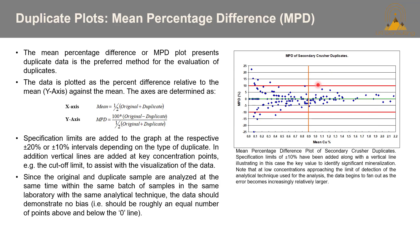Since the original and duplicate samples are analyzed at the same time, within the same batch, in the same laboratory with the same analytical technique, the data should demonstrate no bias — meaning a roughly equal number of points above and below the zero line, shown here in green. Should any bias be evident, it's a cause for concern and requires follow-up. You can see here there is a lot of movement from this line, which is definitely a cause for some concern.